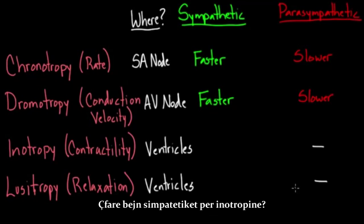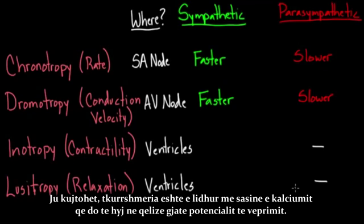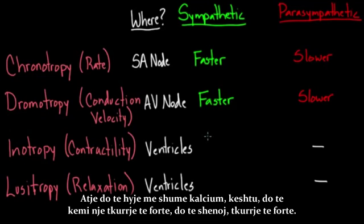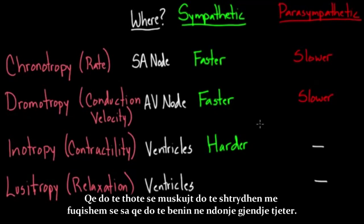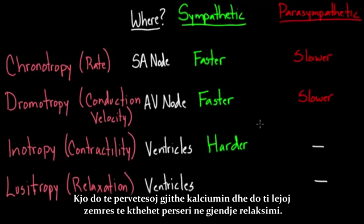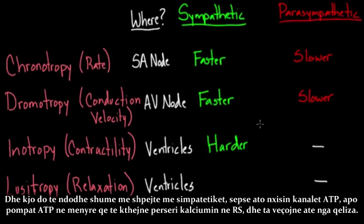Regarding inotropy, contractility is related to the amount of calcium coming in during the action potential. With sympathetic stimulation, you get more calcium in, producing a harder or stronger contraction — the muscles squeeze down more forcefully. For lucitropy, the sarcoplasmic reticulum mops up calcium and allows the heart to relax. Sympathetics stimulate the ATP pumps to get calcium pumped back into the sarcoplasmic reticulum much more quickly, creating faster relaxation.